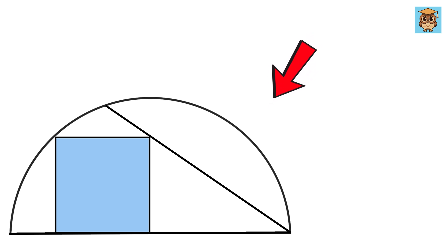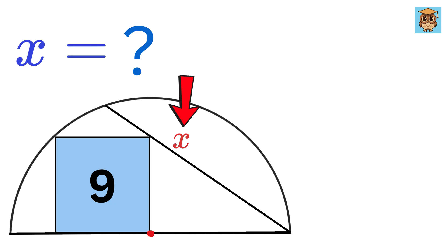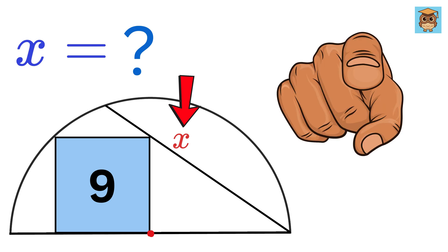In this amazing geometry question we have been given a square whose vertex is also the center of this semicircle. The area of this square is nine square units. Then we also have this line and our job is to find the length of this line. So can you solve it?